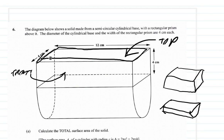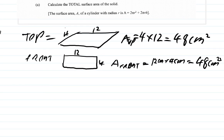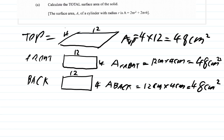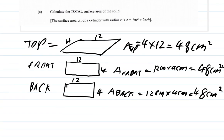The back — you can't see it because it's behind here — but the back has the same dimensions as the front. So the area of the back is 12 cm × 4 cm = 48 cm².